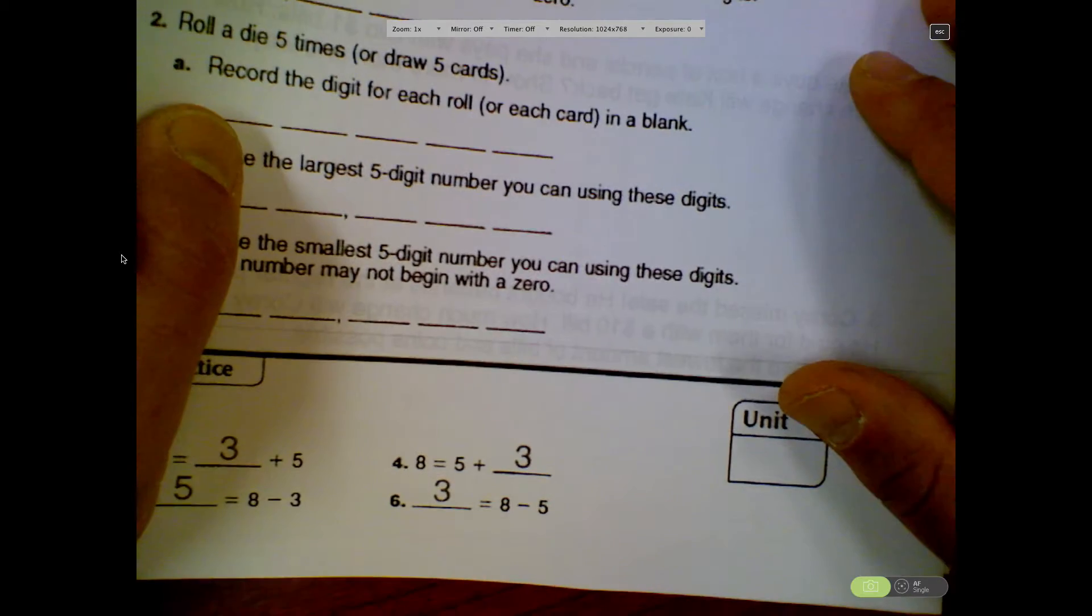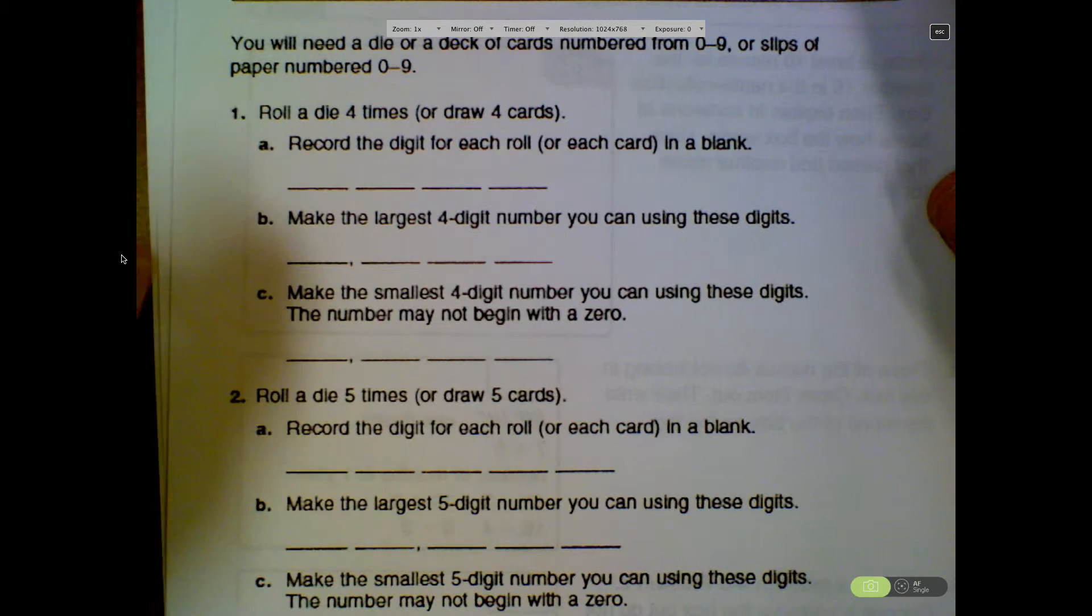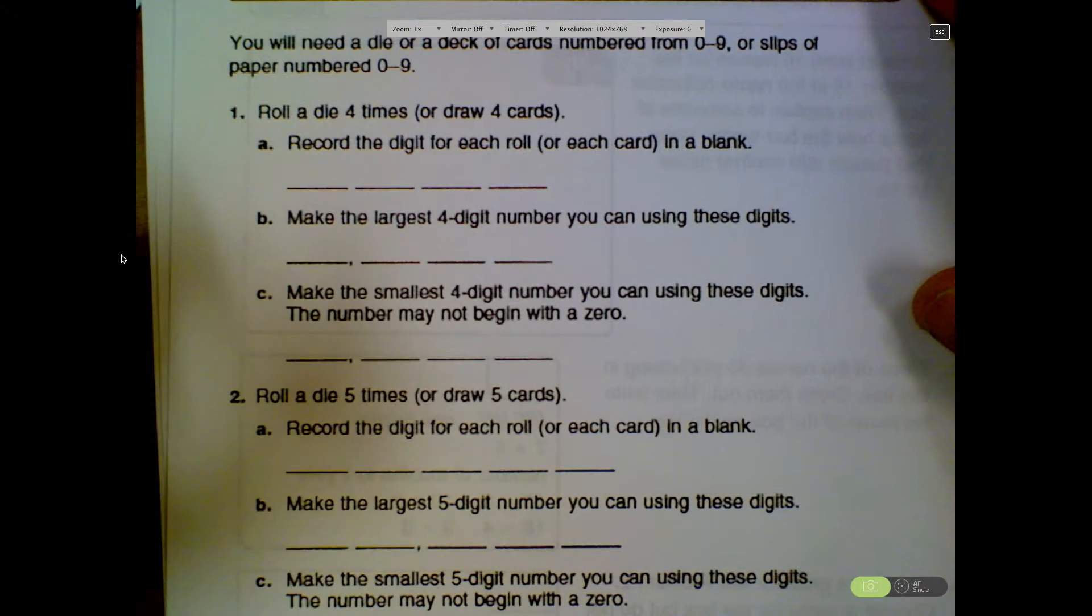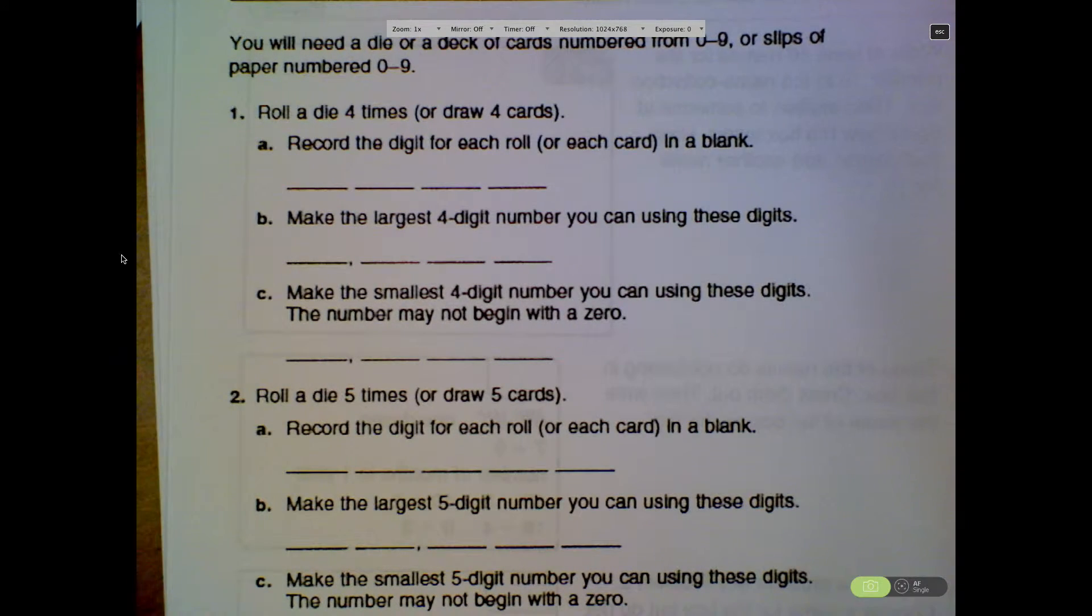The second page is the same as the third page. I copied this wrong, so you only have to do one of these. It says you're going to need a die or a deck of cards numbered 0 to 9. It's like a deck of cards at home. And what you're going to do is you're going to roll a die four times or draw out four cards. So I roll a 4, a 1, a 6, and a 2.